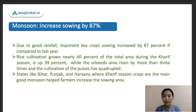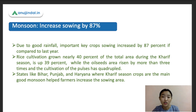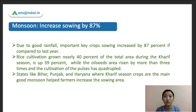Since rice is a very water-intensive crop, the good rainfall this year in June has resulted in high chances of increased rice production. States like Bihar, Punjab, and Haryana are major kharif agriculture states where they grow a lot of crops, especially rice, wheat, and pulses. This good monsoon has helped farmers increase their sowing area significantly.